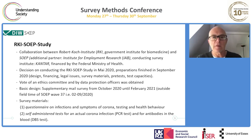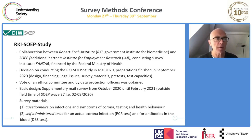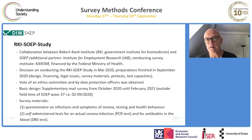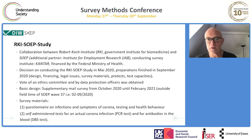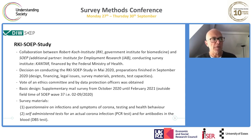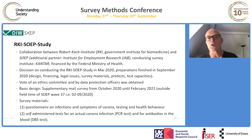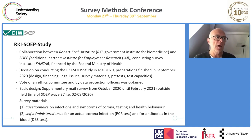The basic design is a supplementary mail survey running from October 2020 to February 2021, outside the original SOEP field period of February to September. We sent respondents two materials: first, a questionnaire on infections, symptoms of corona, testing, and health behavior; and second, self-administered tests — a PCR test for actual corona infection and a DBS test for antibodies in the blood.